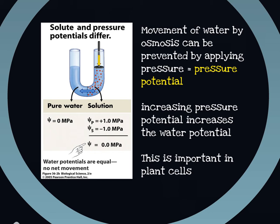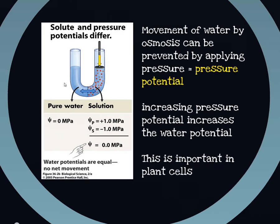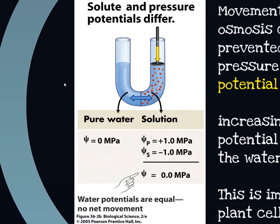In this video tutorial we're going to talk quickly about pressure potential and how it applies to plant cells. If we have a look at this diagram, it's explaining an important idea. If we've got pure water here, we would say it has a water potential of zero. Pure water has a water potential of zero.